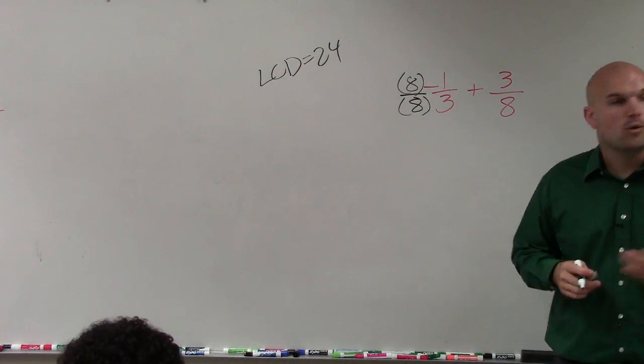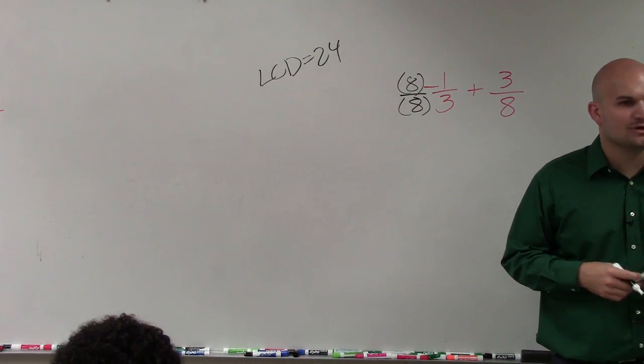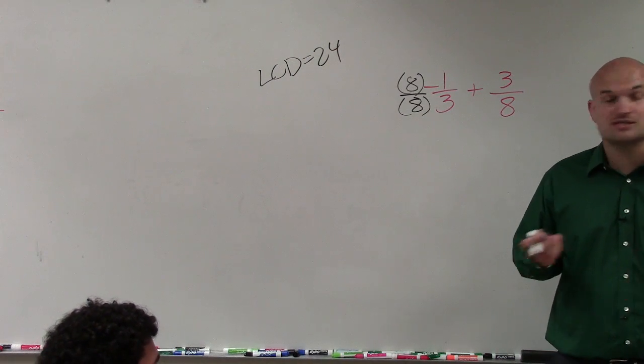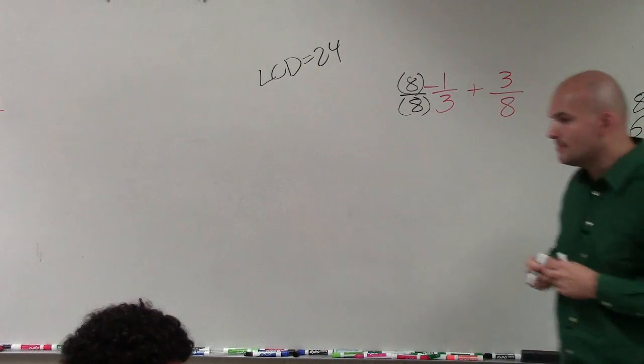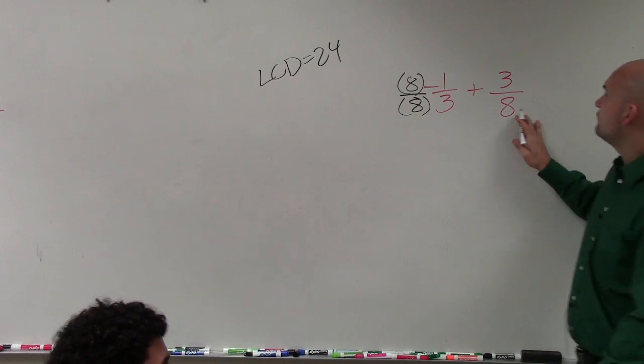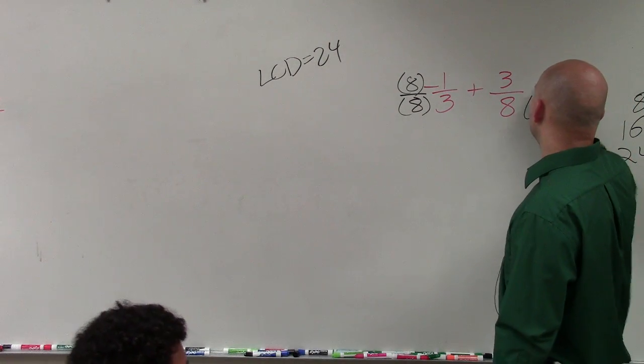Think about it again. 1 half times 3 over 3 equals 3 over 6. Is 3 over 6 equivalent to 1 half? Yes. So when you're multiplying your fraction, we want to make sure we keep equivalent fractions. For 3 eighths, we need to multiply by 3 over 3.